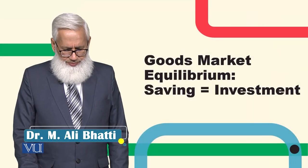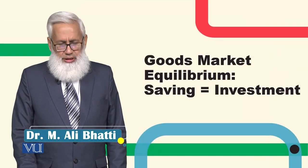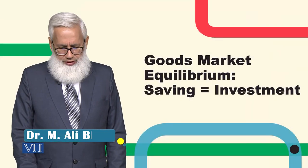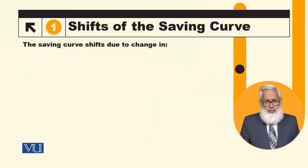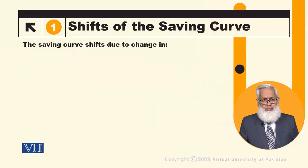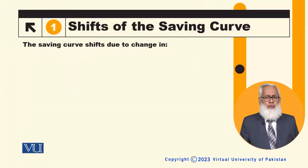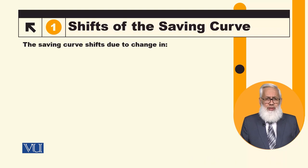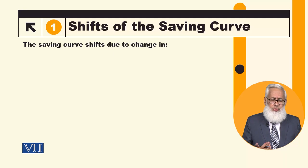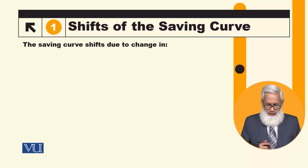Goods market equilibrium means saving equals investment. We will talk about equilibrium with the help of this equilibrium condition. When desired saving equals desired investment, the goods market is clear.